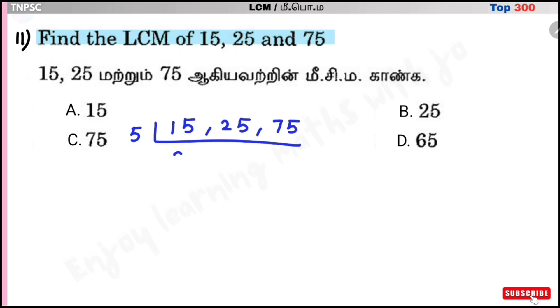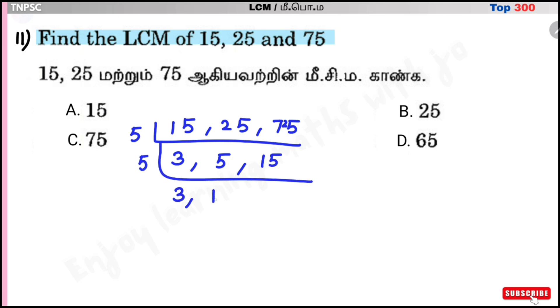Dividing by 5: 3s are 15, 5s are 25, 5s are 5 remaining. Next, 5s are 25. Then 5 table: 3, 1, 5s are 5, 3, 5s are 15.